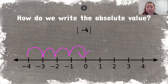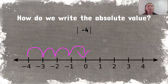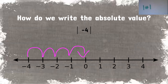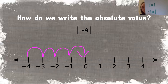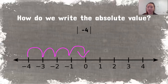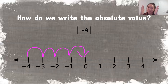How do we write the absolute value? We use two little lines on the sides to show that we're going to find the absolute value of something. When we see these two lines with a number or negative number inside, we know they indicate we're finding the absolute value. Sometimes you could have a negative sign outside the two lines, which means you find the absolute value of the number inside first, and then apply the negative on the outside.